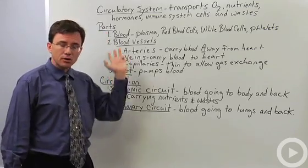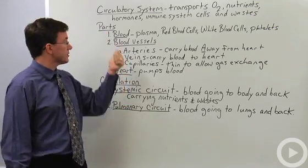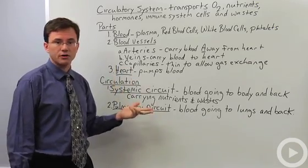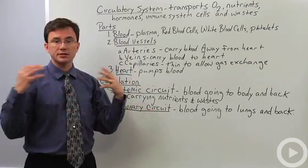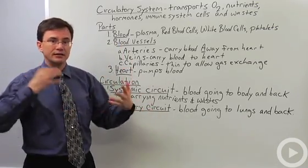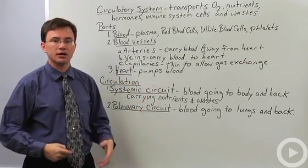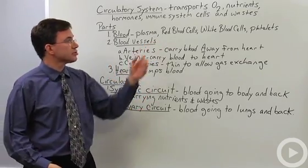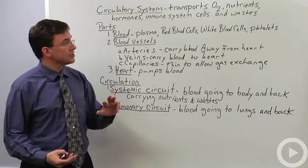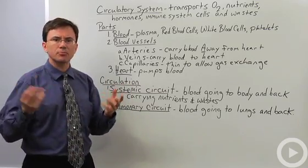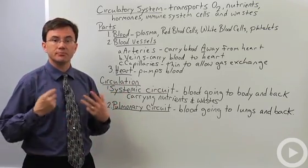There are three major parts to the circulatory system: the blood, the blood vessels, and the heart. The blood contains things like the liquid plasma that is the non-cellular part of the blood. There's the red blood cells, the white blood cells, and then these cell parts called platelets that are involved in blood clotting.